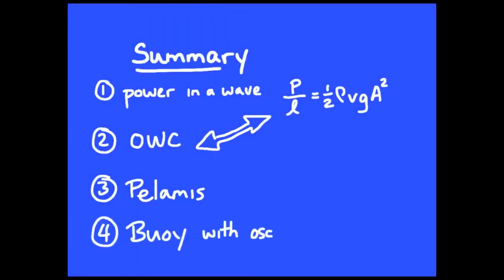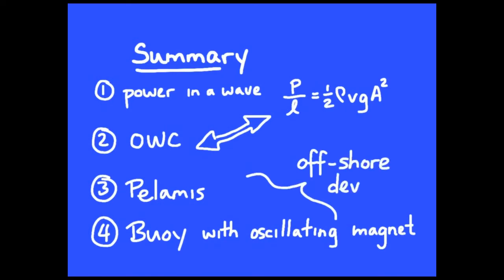The buoy with oscillating magnet, another offshore scheme. You typically find both of these in an array of power generating devices. Also, remember that they can't be too far offshore because you're losing, in the transmission of the electricity, you're losing valuable power. So they both certainly be within view of the shore.